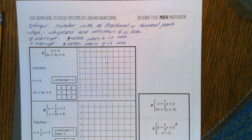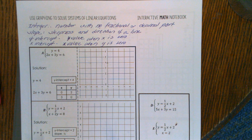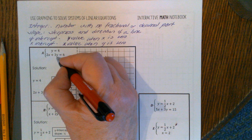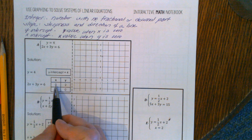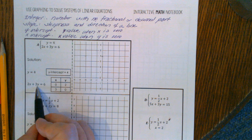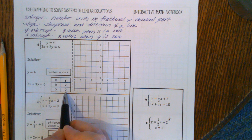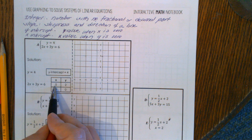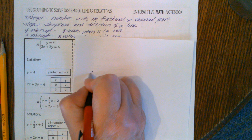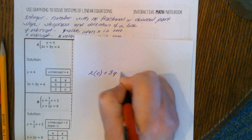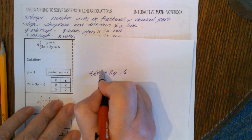We're going to try to solve systems of linear equations and figure out if they can be solved with graphing. The first system is y=4 and 2x+3y=6. What they did here is take the second equation and plug in 0 for x to solve for y: 2 times 0 plus 3y equals 6.